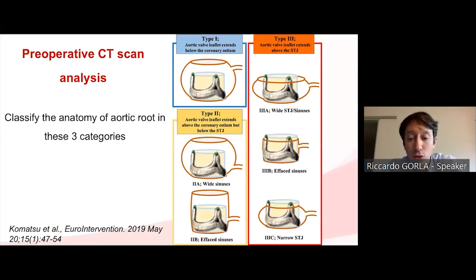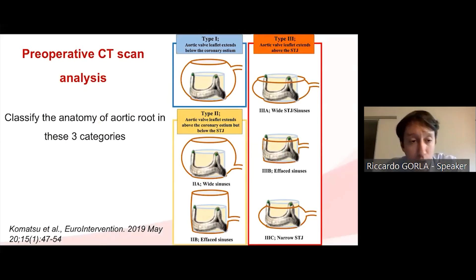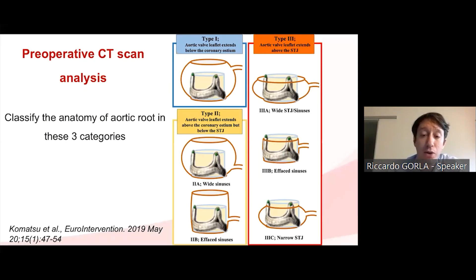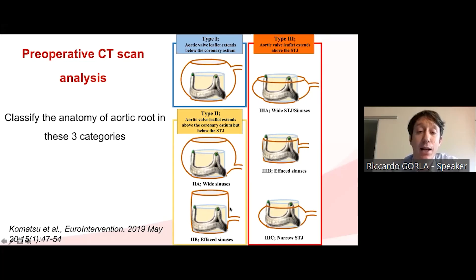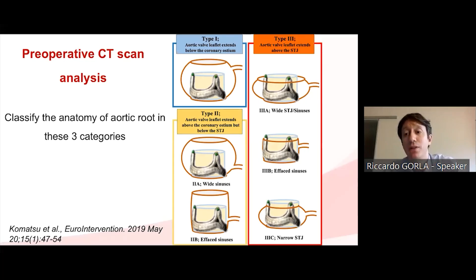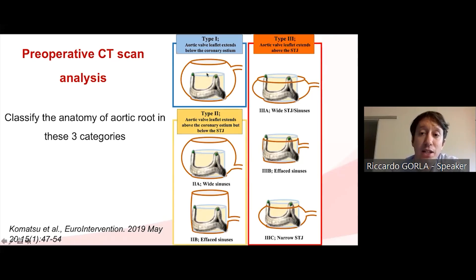Next, you must merge the information about the surgical valve with the patient's anatomy by carefully studying the CT scan. Classify your patient into three categories based on whether the aortic leaflets extend above or below the coronary ostia, and whether they extend above the sinotubular junction. In type one, the aortic leaflets are below the coronary ostia, so there is never a risk of coronary occlusion.